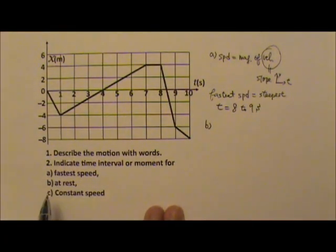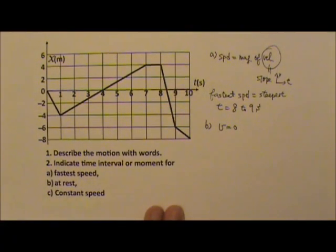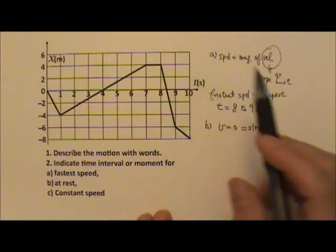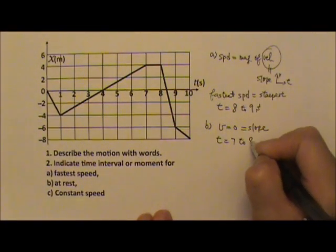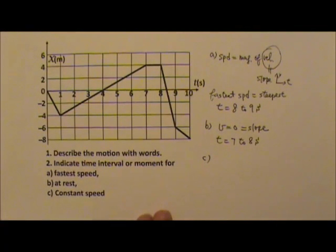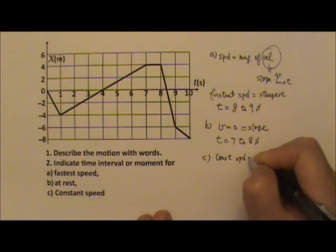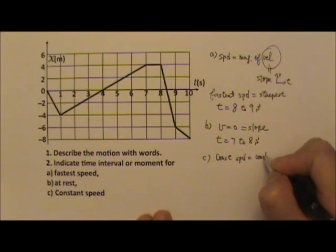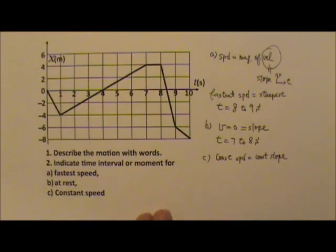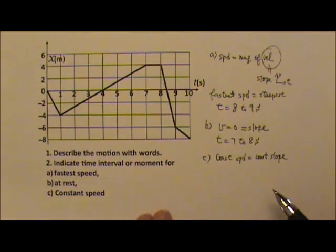We want the time when the object is at rest — that means velocity is 0, so slope is 0. The only time when the slope is 0 is between 7 and 8 seconds. Then we want the time when the object is moving at a constant speed. Constant speed means a constant magnitude of velocity, which means a constant slope. We get different slopes, but in each segment the slope is constant.